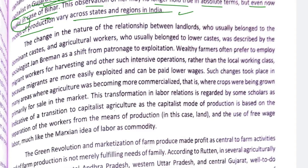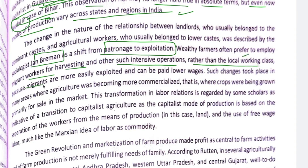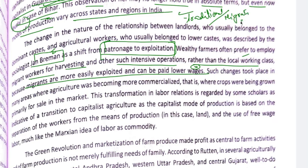This observation of Gail Omvedt may no longer hold true in absolute terms, but even now the modes of production vary across states and regions in India. The changing nature of the relationship between landlords — who usually belong to dominant castes — and agricultural workers — who usually belong to lower classes — was described by sociologist Jan Breman as a shift from patronage to exploitation. Wealthy farmers preferred to employ migrant workers for harvesting and other intensive operations rather than local working class, because migrants are more easily exploited and can be paid lower wages.